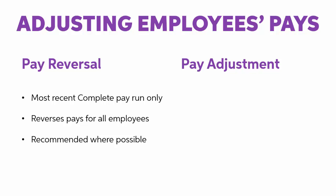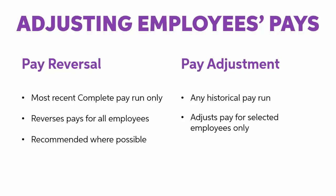Pay adjustments, on the other hand, can be made to any historical pay and only apply to the employees whose pays you're adjusting. The rest of the pays in the original pay run are unaffected. So pay adjustments can be useful in cases where a single employee's pay needs to be adjusted but reversing the whole pay run isn't an option. The most common scenario is correcting an overpayment to an employee.